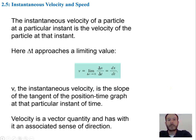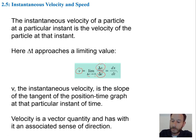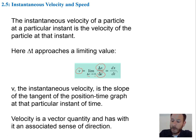Your instantaneous velocity is the velocity of a particle at an instant in time, and we find that by using a limit. The velocity is equal to the limit as delta t approaches zero — as delta t gets lower and lower — we're trying to figure out what delta x over delta t is. That's given by dx/dt, which is our derivative. We also might show this in physics as x prime.